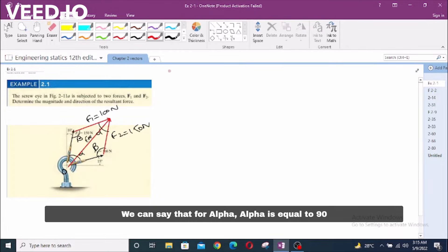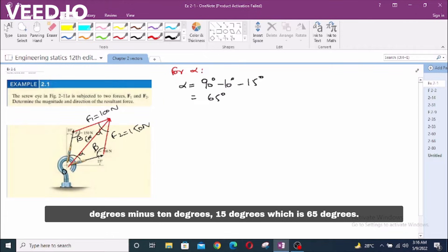This angle is also beta. From here we can say that for alpha, alpha is equal to 90 degrees minus 10 degrees minus 15 degrees which is 65 degrees.